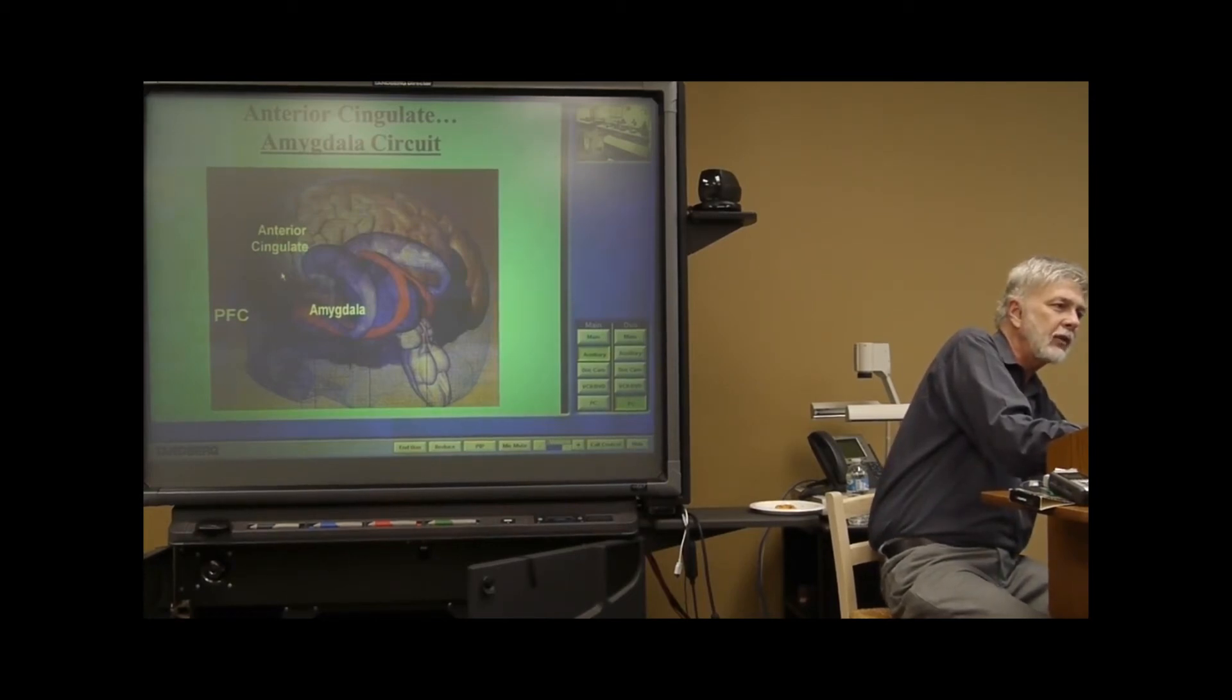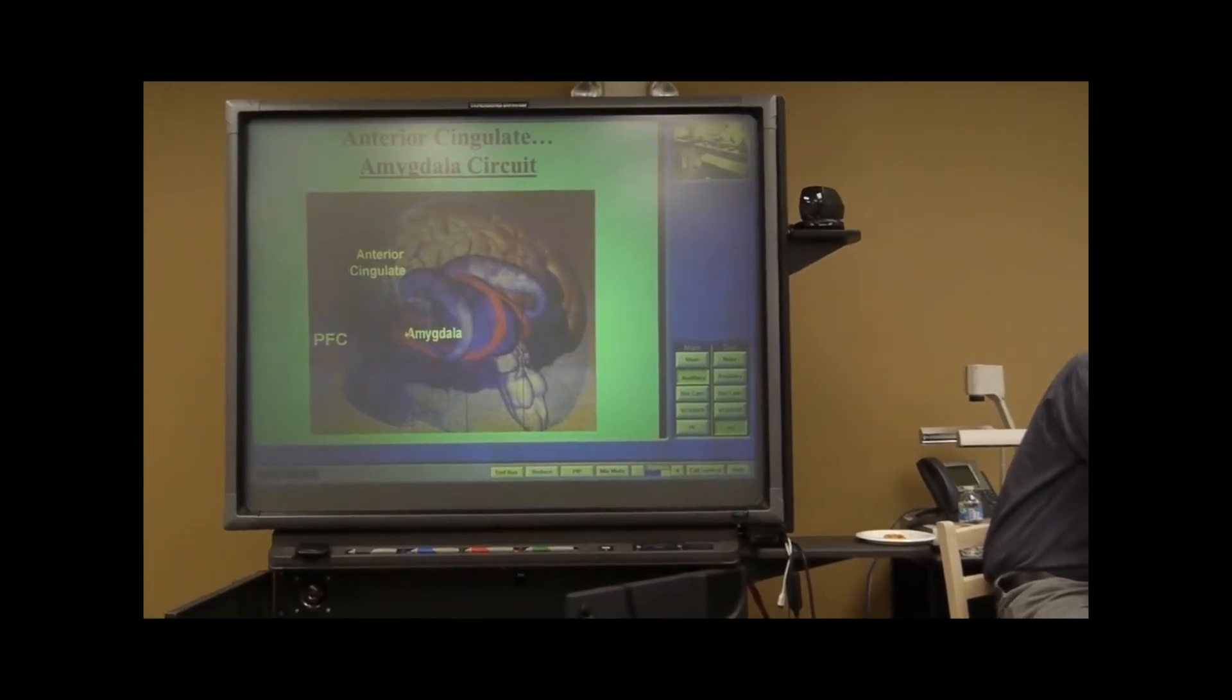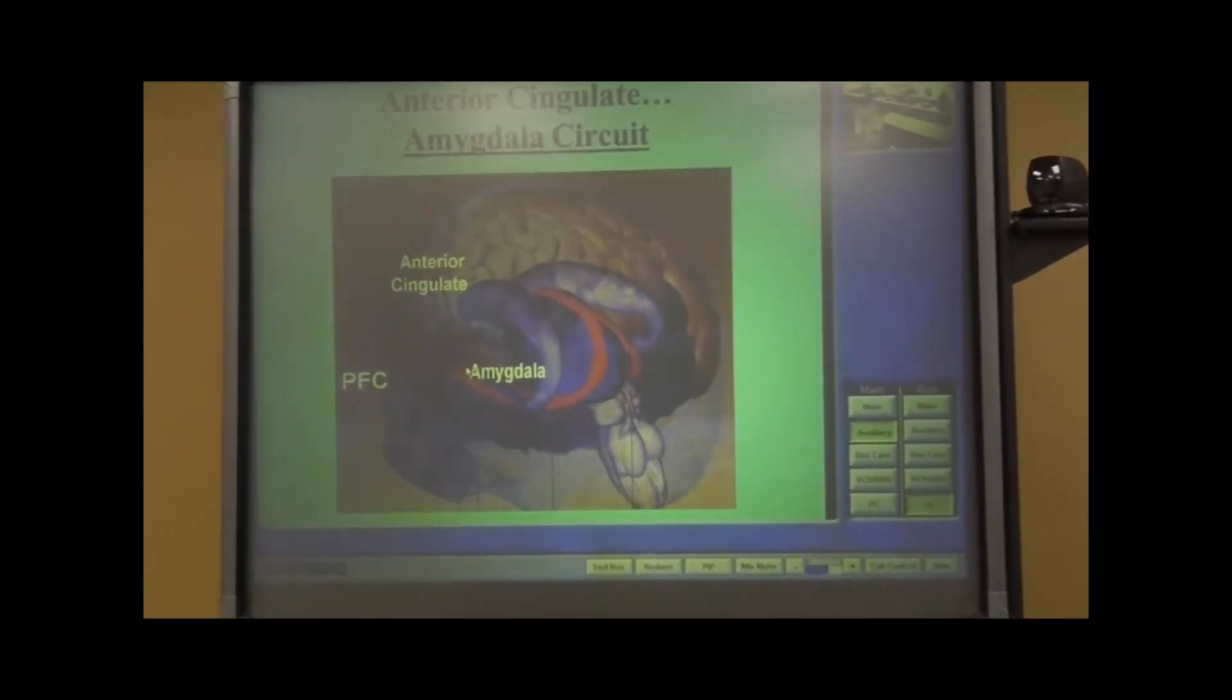But the anterior cingulate, see little arrows. What this suggests, these are pathways that go down to the amygdala in both the right and left hemispheres.